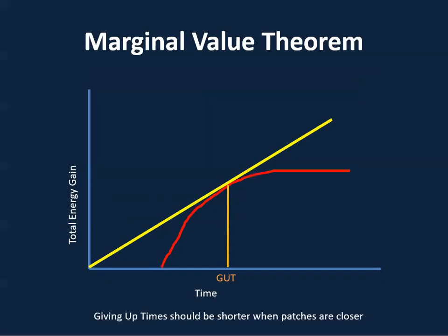We can assume that giving up time will be shorter when patches are closer together, because animals are able to freely roam between patches, it may be safer to do so, and there is more food at different patches. When patches are closer together, both the observed and theoretical giving up times will be shorter.